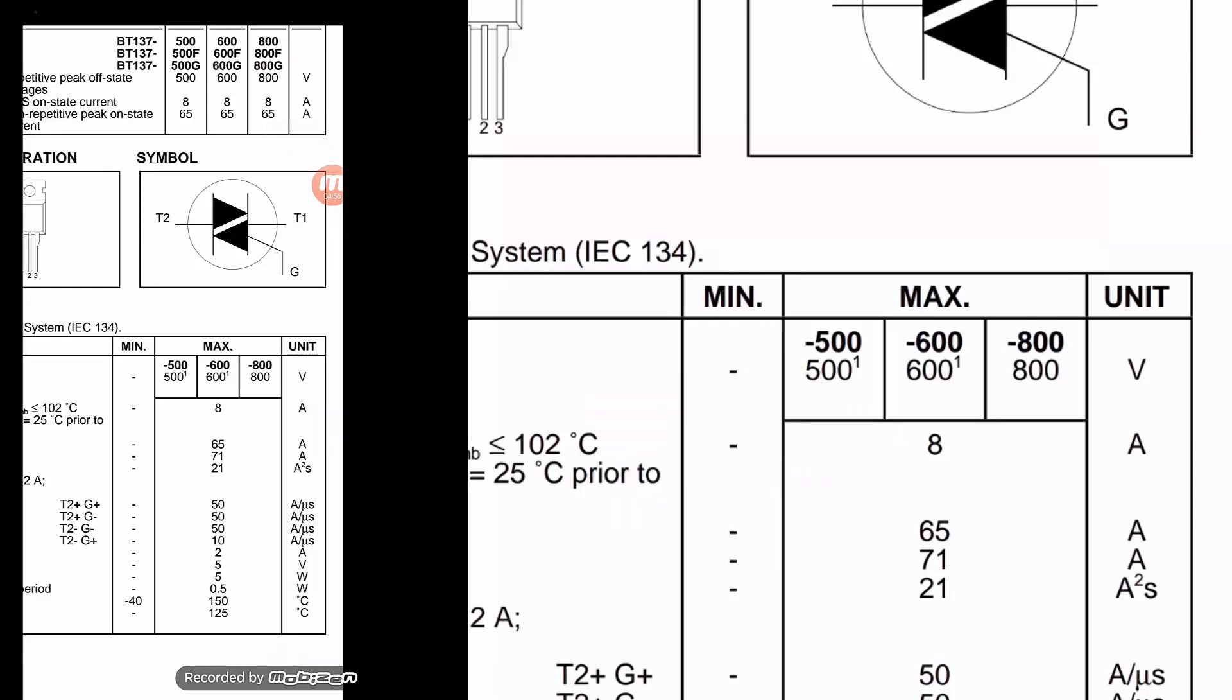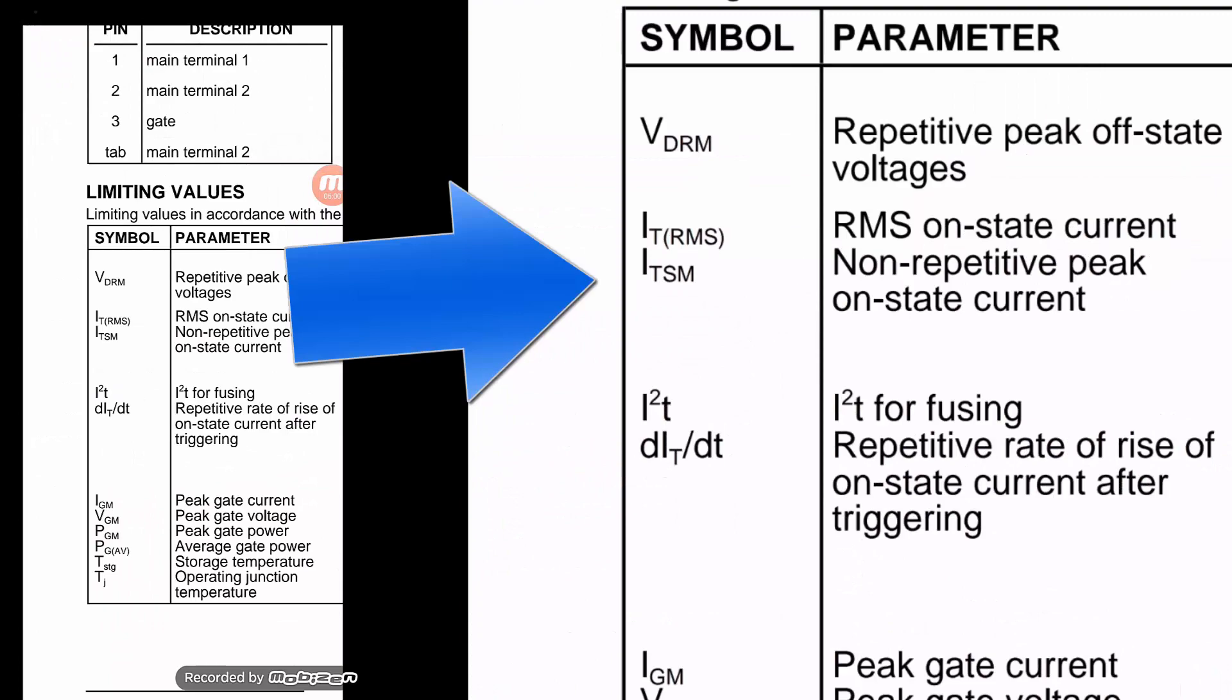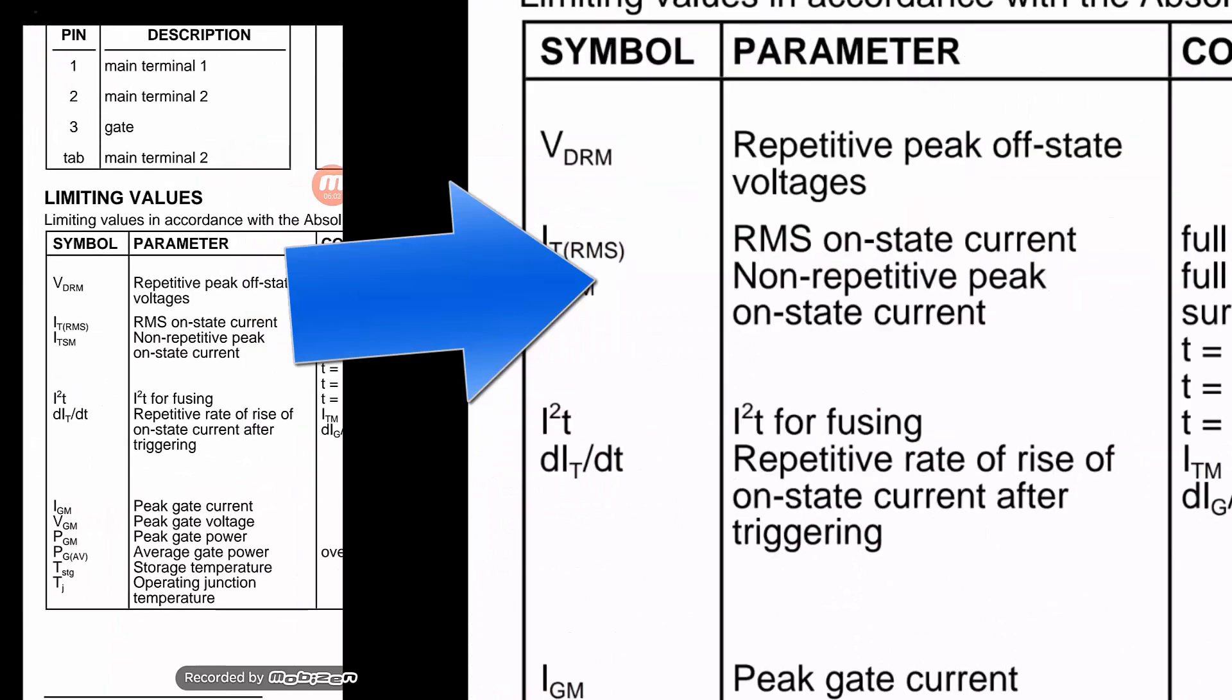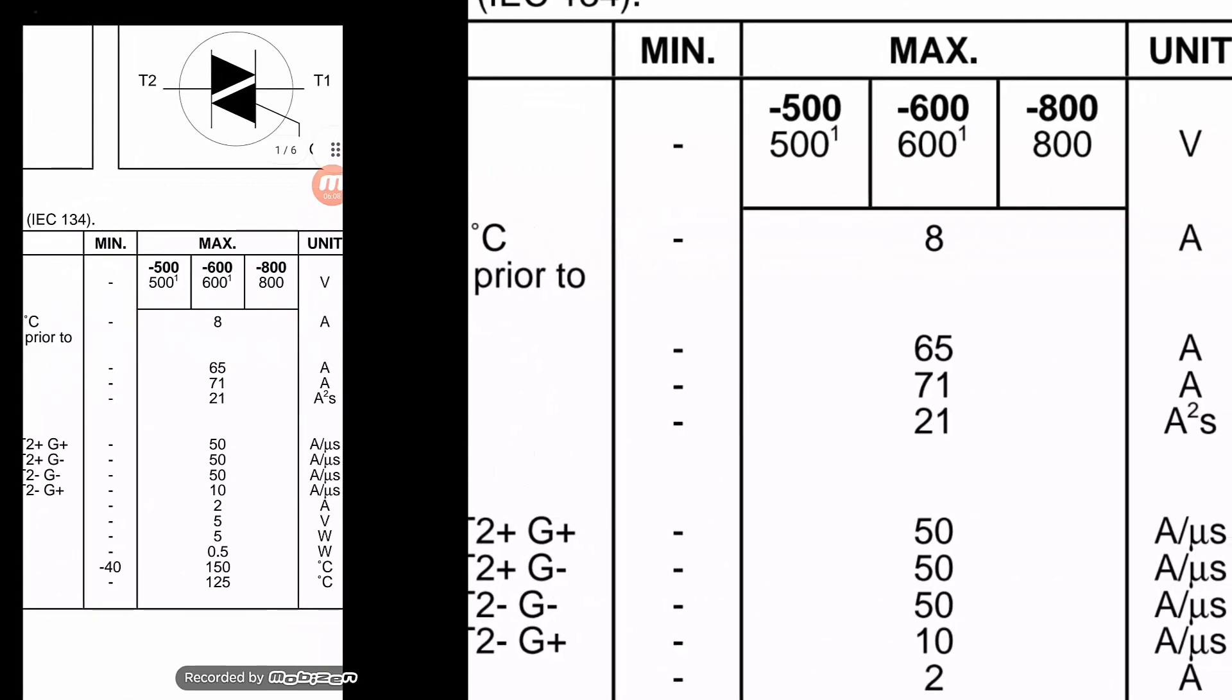Then we have ITSM, that is non-repetitive peak on-state current. So it is 65 ampere.